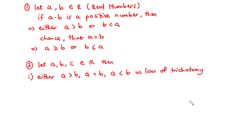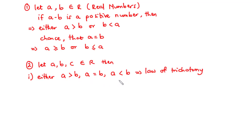We call this the law of trichotomy. It basically states that if we have two real numbers a and b, then exactly one of these situations is true: either a is greater than b, a is equal to b, or better still a is less than b.